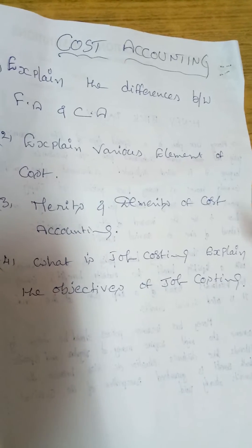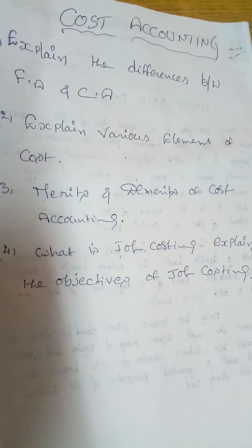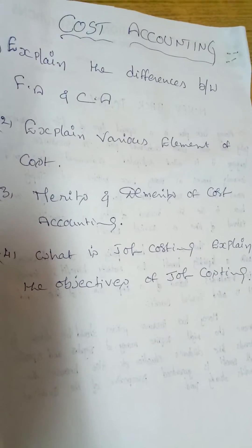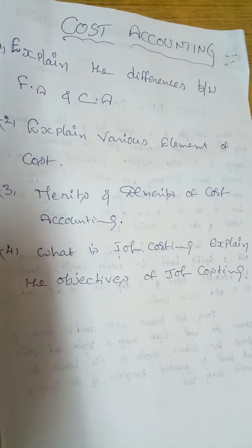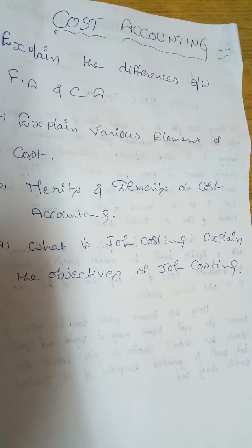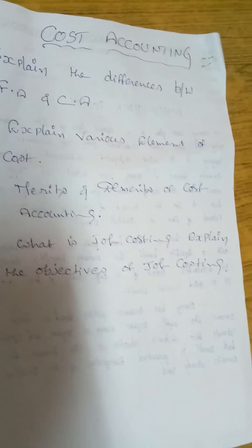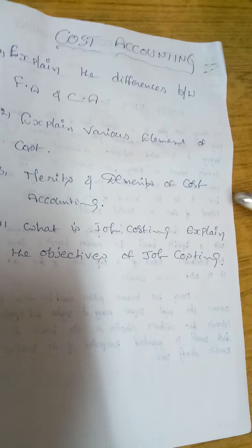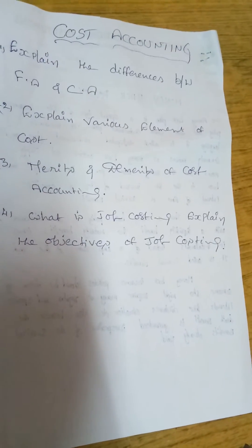Next, the third question: explain the merits and demerits of cost accounting. What are the merits and demerits of cost accounting? By one word you can write clearly and score 12 marks.